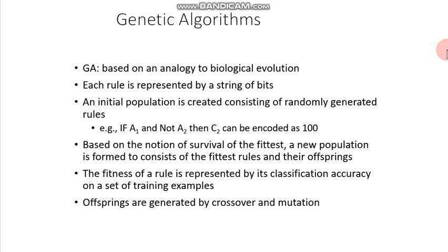A genetic algorithm is an analogy to biological evolution. Each rule is represented by a string of bits, and the rule is nothing but a chromosome — the individual. An initial population is created consisting of randomly generated rules. In biological evolution, this initial population generates new offspring. Based on the notion of survival of the fittest, a new population is formed consisting of the fittest rules and their offspring.